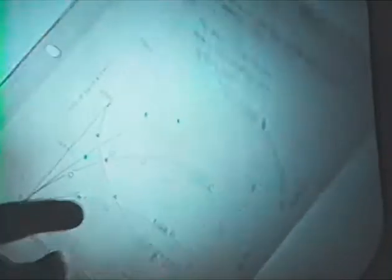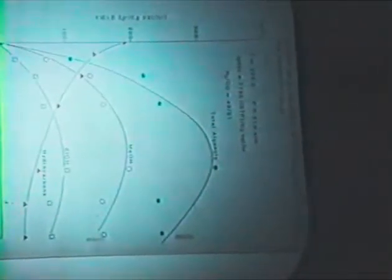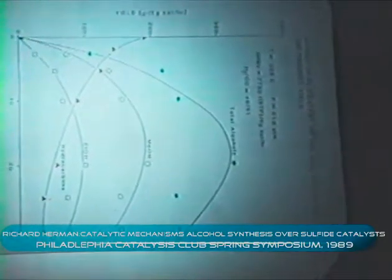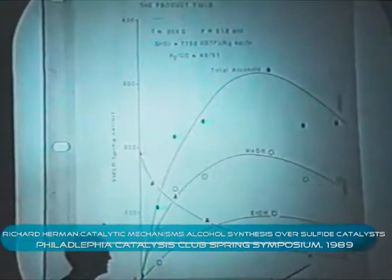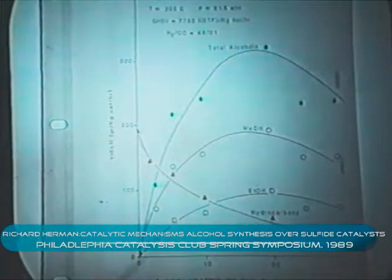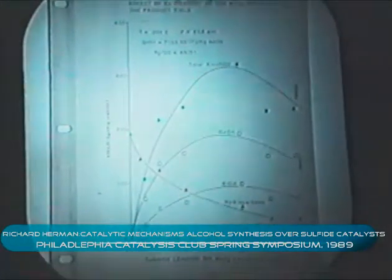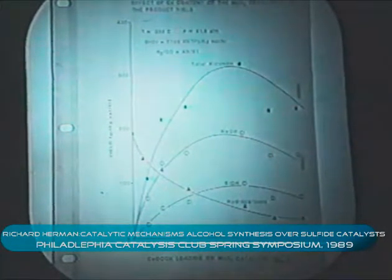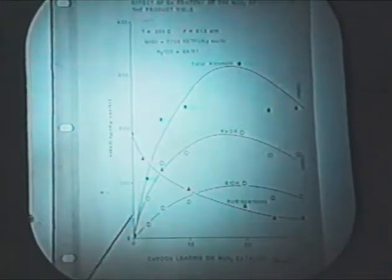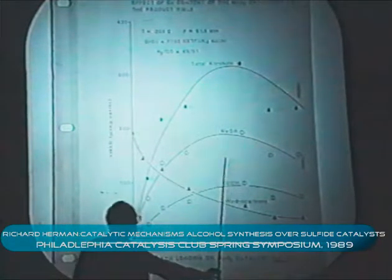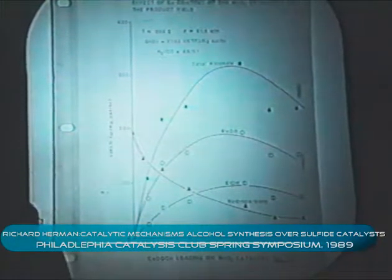Now, the cesium content of these catalysts affects the alcohol activity, as well as the selectivity. If we increase the doping, the hydrocarbon yield decreases. At the same time, the alcohol synthesis activity increases and goes to a maximum. The maximum is somewhat temperature-dependent, but it is generally between 10 to 20 weight percent of cesium on the catalyst.